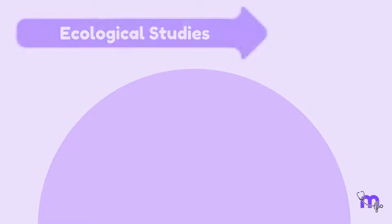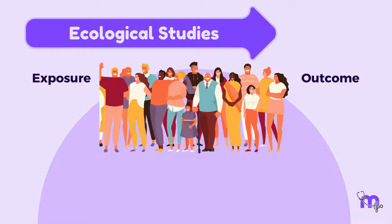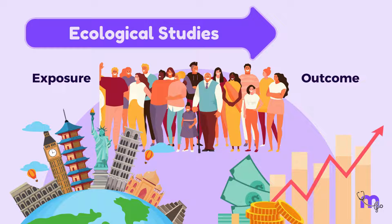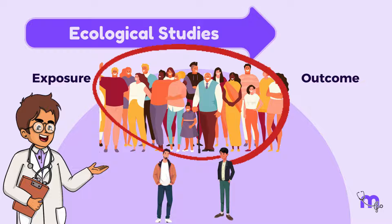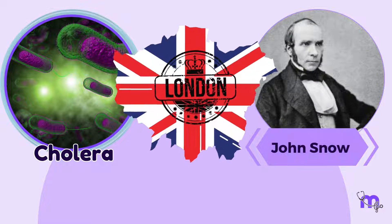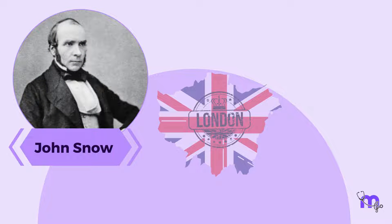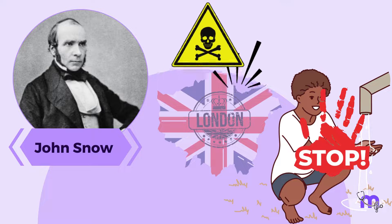Moving on to the third design: ecological studies. In this type of study, I try to understand the relationship between outcome and exposure at a population level, where population represents a group of individuals with a shared characteristic such as geography, ethnicity, or socioeconomic status. I study the population as a whole rather than the individual. The study by John Snow regarding a cholera outbreak in London is considered one of the first ecological studies to solve a health issue. He mapped the locations of deaths caused by cholera and determined that the source was a water pump on Broad Street, and had the handle removed in 1854, which stopped the deaths in that area.